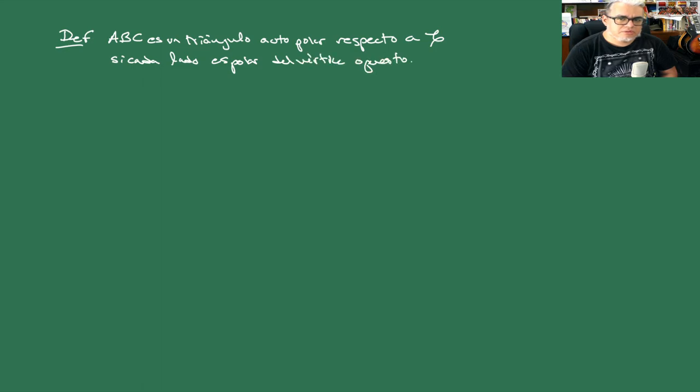Ahora lo que vamos a hacer es dar una definición de triángulo autopolar. Vamos a decir que ABC es un triángulo autopolar respecto a la cónica C si cada lado es polar del vértice opuesto.